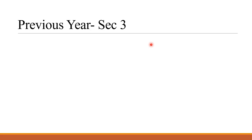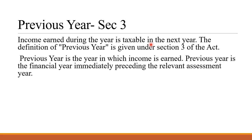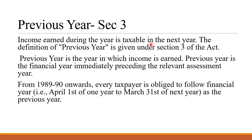After the assessment year, the next concept is the previous year under section 3. The income earned during the year is taxable in the next year. The definition of previous year is given under section 3 of the act, which states that the previous year is the year in which income is earned. Previous year is the financial year immediately preceding the relevant assessment year. So if 2020-21 is the assessment year, the year immediately preceding it was 2019-20, so 2019-20 will become the previous year. From 1989-90 onwards, every taxpayer is obliged to follow the financial year — that is April 1st of one year to 31st March of the next year — as the previous year. For this year, the previous year will be considered as 2019-20.